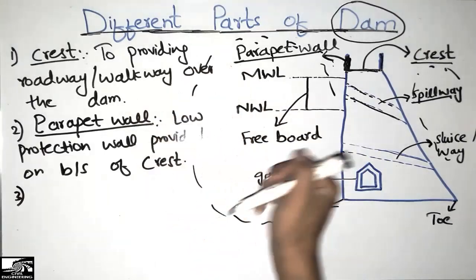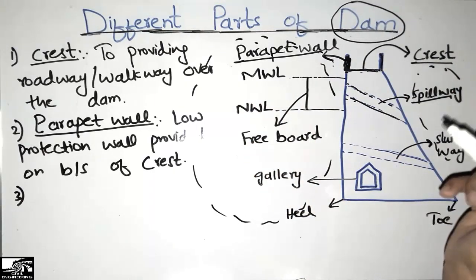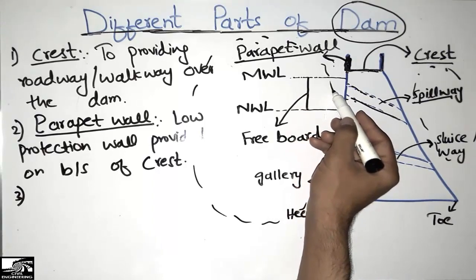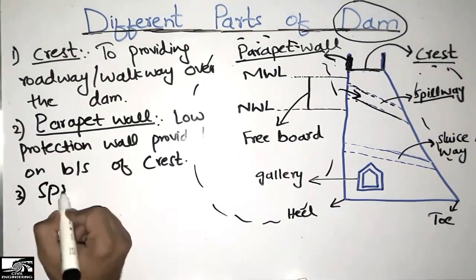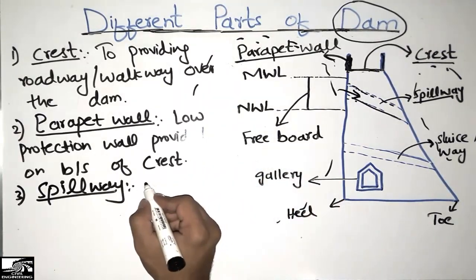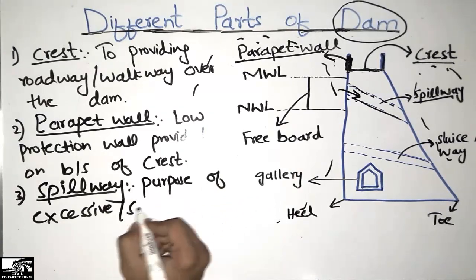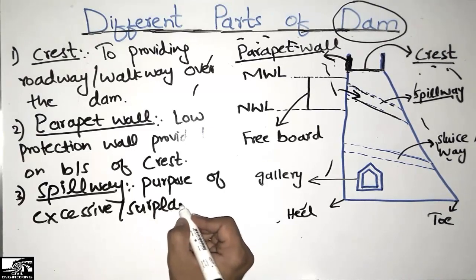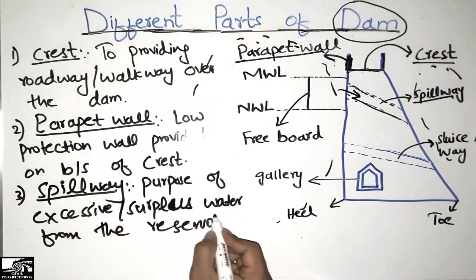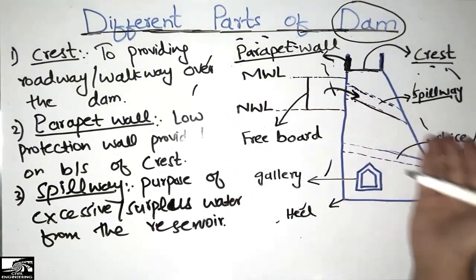On the upstream side of the dam, there is a river or stream, and water flows to the downstream side. The spillway is provided near the top surface of the dam to allow excessive surplus water that is not needed to flow from the reservoir through the spillway into the downstream side of the dam.